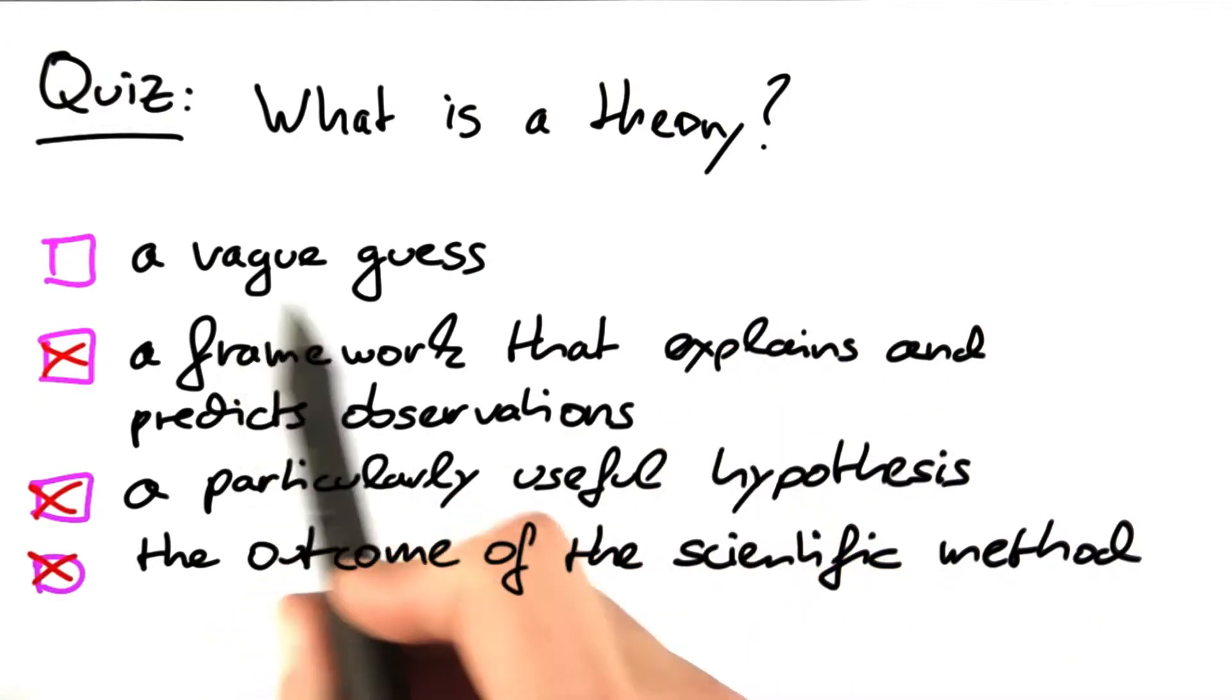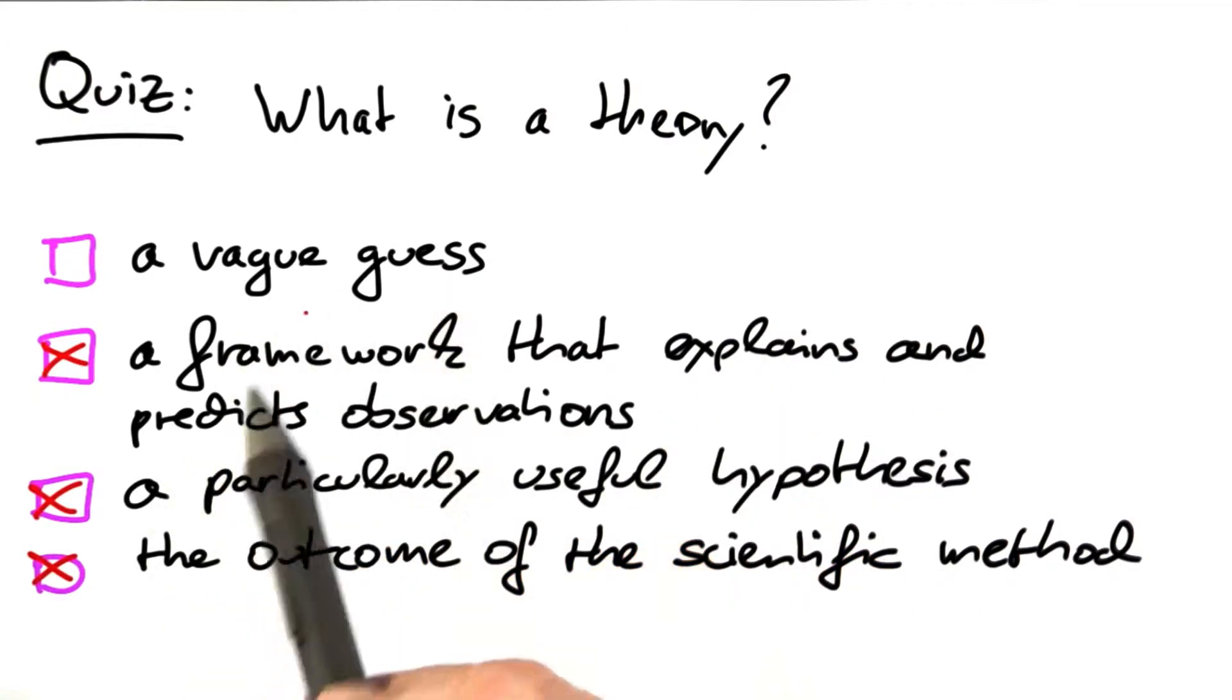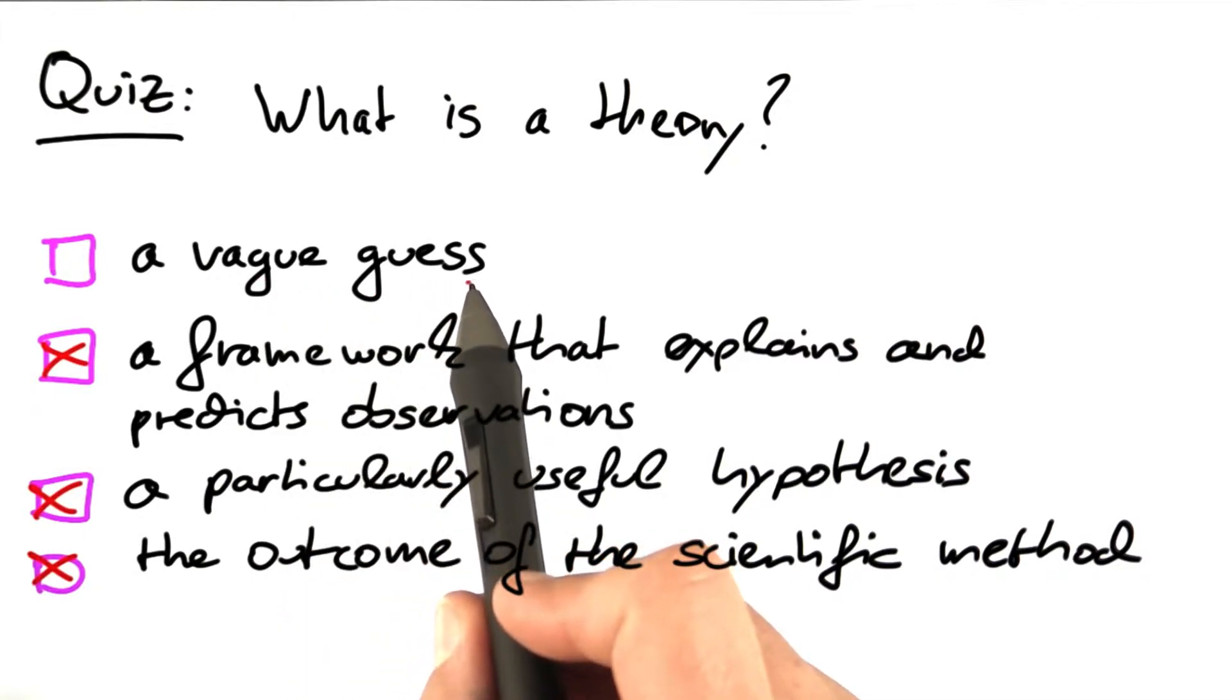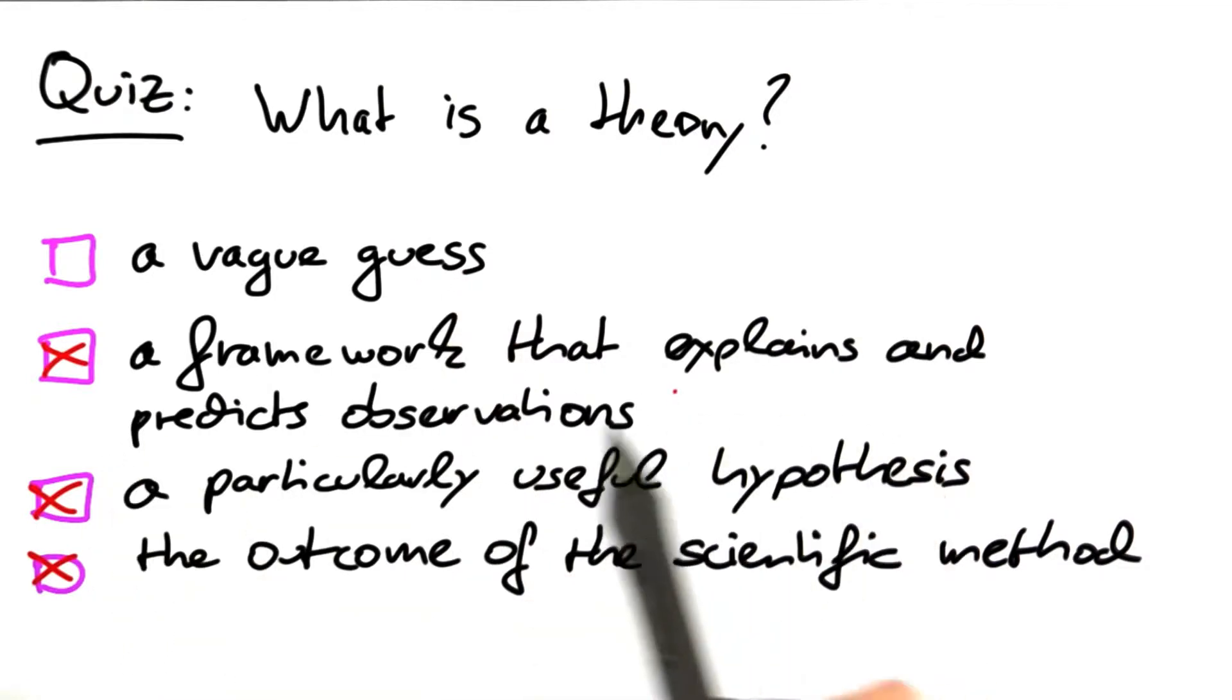A theory, however, is not a vague guess when you're talking about the scientific meaning of a theory. When you have scientists speaking about theory, they're talking about a framework that is consistent with all earlier observations and predicts lots and lots of future observations, and it's actually the best framework in most cases.